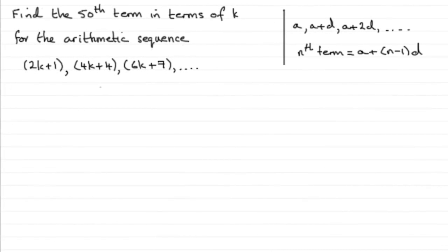Now for two marks, this last question, we're asked to find the 50th term in terms of k for the arithmetic sequence shown here. 2k plus 1 is the first term, second term 4k plus 4, third term 6k plus 7 and so on.